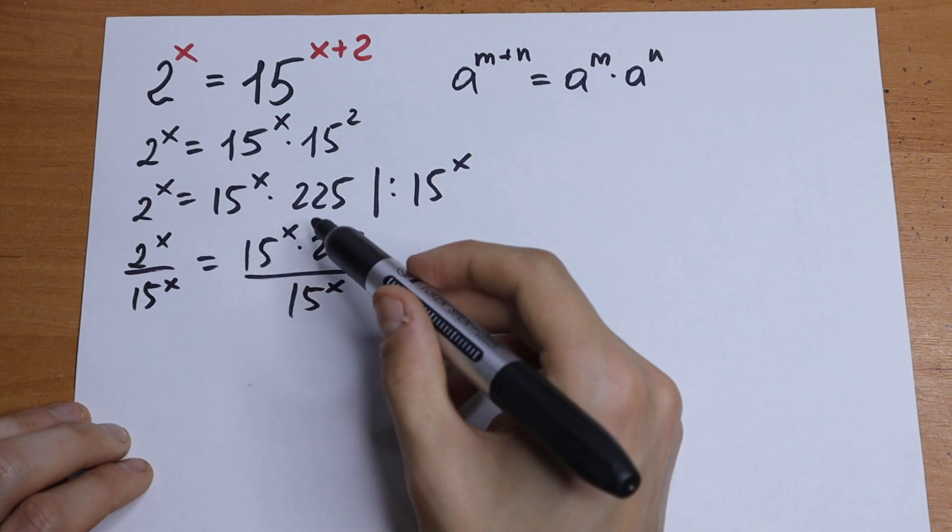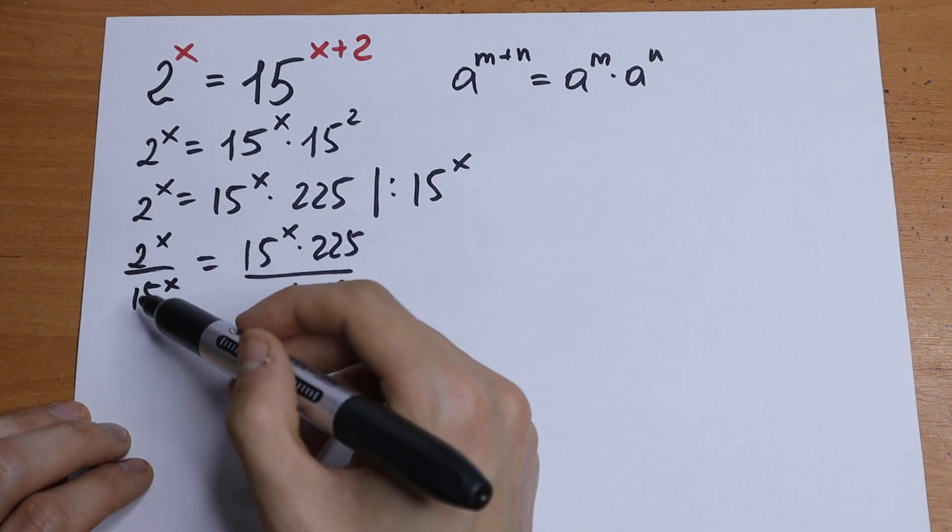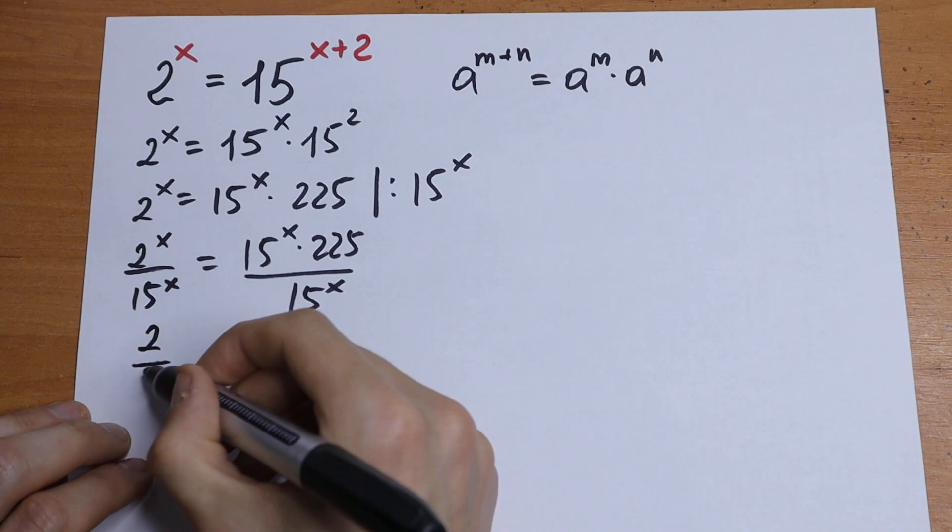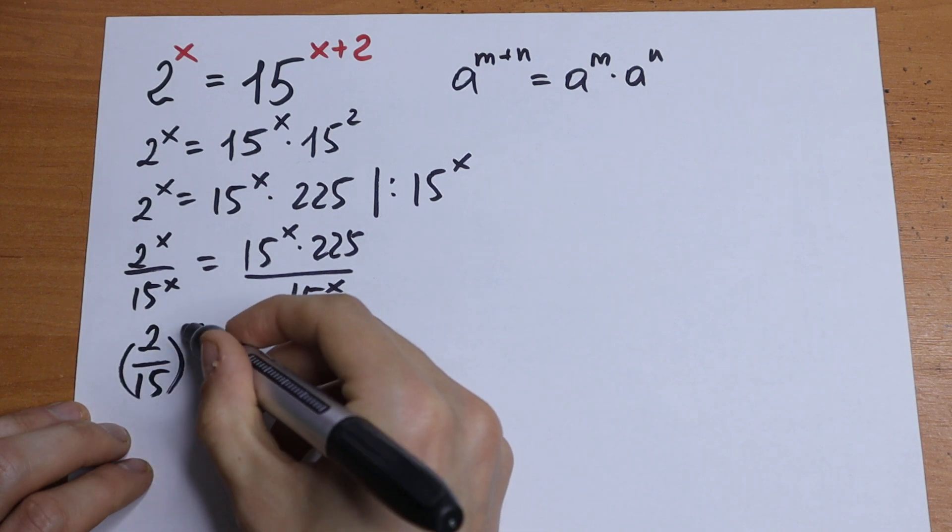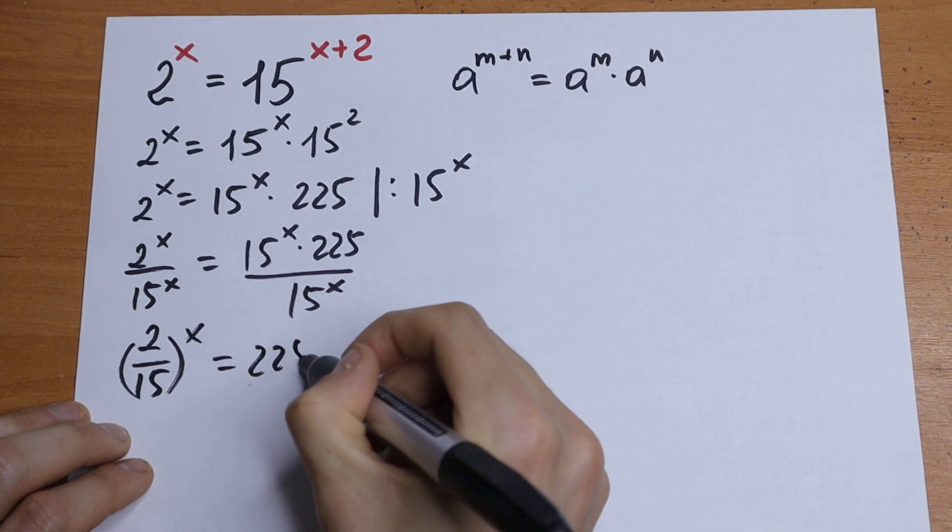For sure canceling these both, and right here we can write it as 2 over 15 to the power x equal to 225.